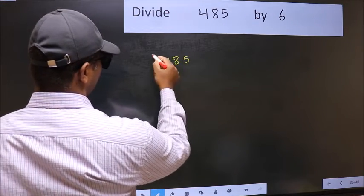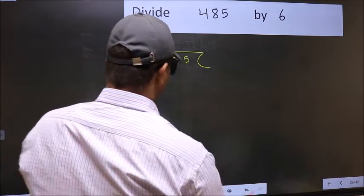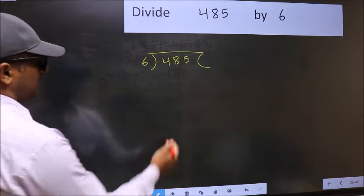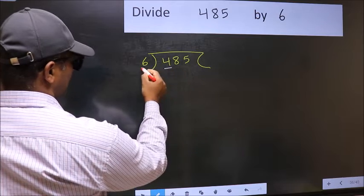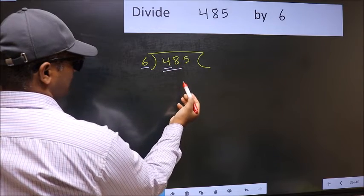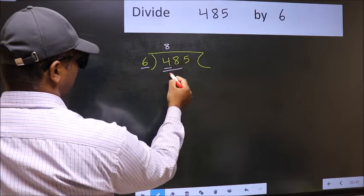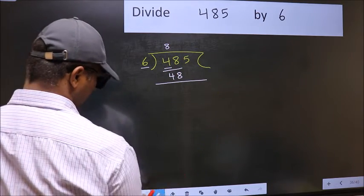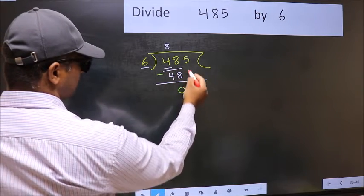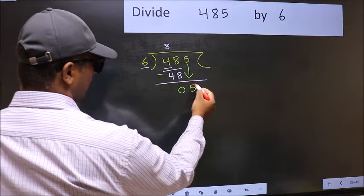485 and 6 here. This is your step 1. Next, here we have 4 and here 6. 4 is smaller than 6, so take two numbers: 48. When do we get 48 in the 6 table? 6 times 8 is 48. Now you should subtract. 48 minus 48 is 0. After this, bring down the next number. So 5 down.